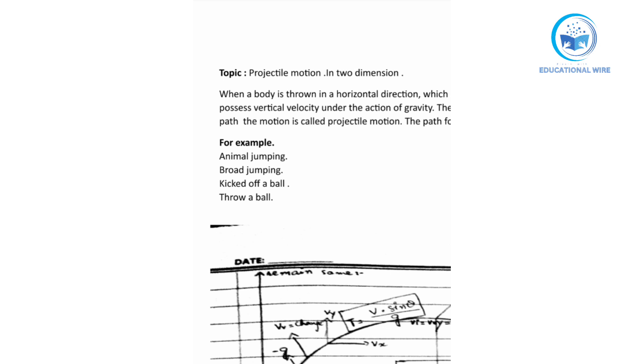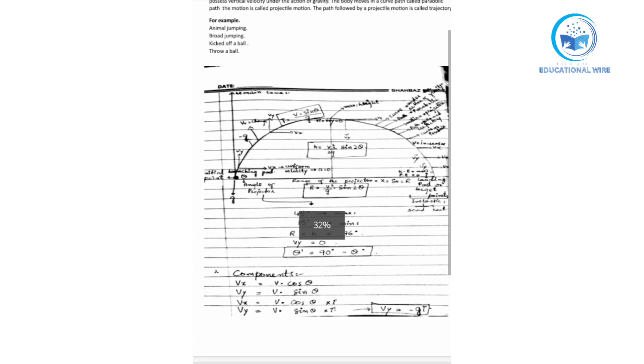You will not fully understand this definition before looking at the diagram, so let's move to the diagram. In the diagram, the definition says that when a body is thrown in a horizontal direction — this is the horizontal direction — and the body is being thrown from here to this side.